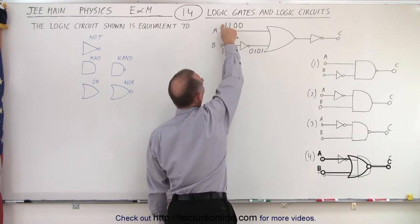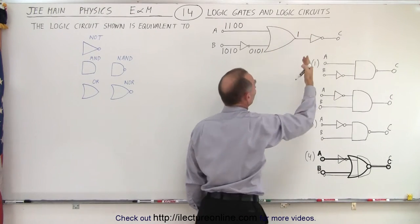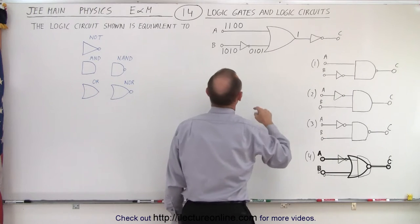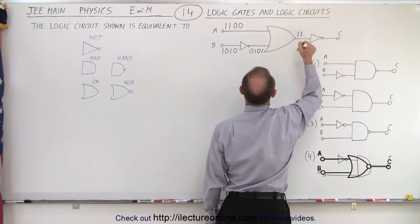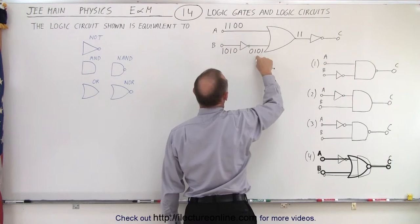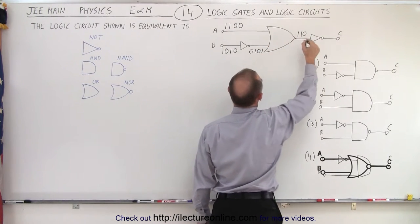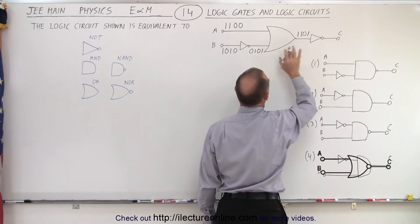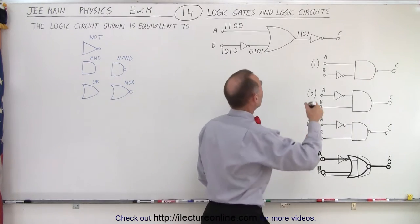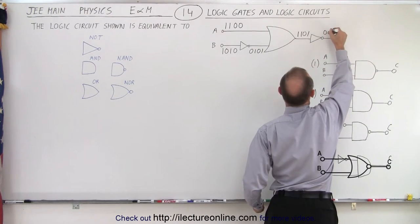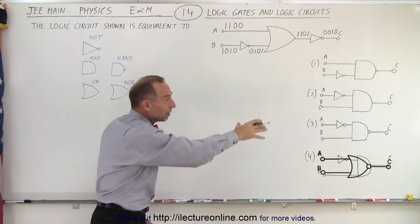With the OR gate: 1 and 0 gives 1; 1 and 1 gives 1; 0 and 0 gives 0; 0 and 1 gives 1 — so the OR gate output is 1, 1, 0, 1. Then a final NOT gate reverses everything, giving a final output of 0, 0, 1, 0. That's the output we need to match.